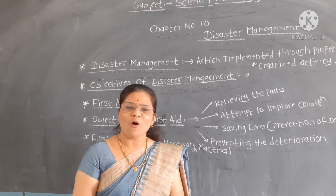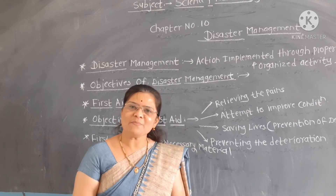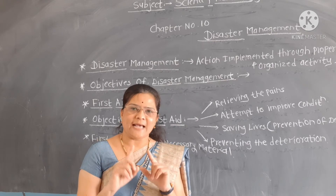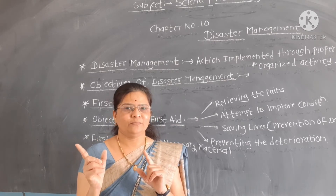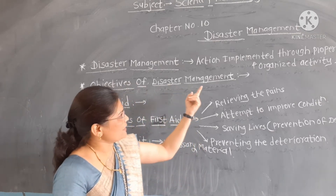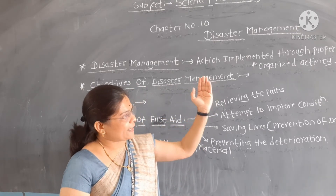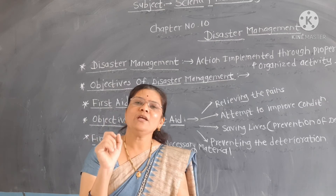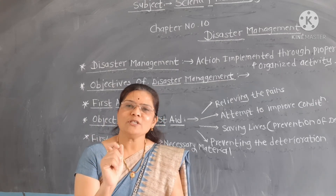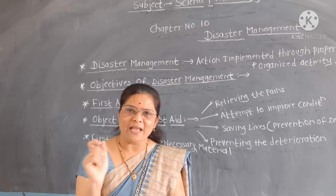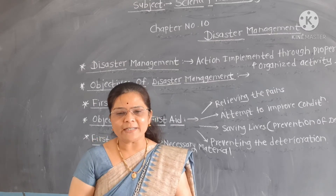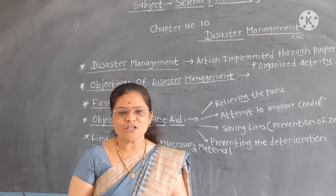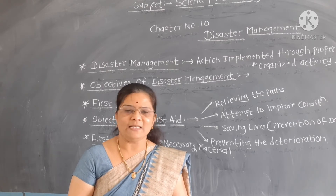Disaster may be minor or major, short-term or long-term. There is a close relationship between disaster and human participation. In disaster management, coordination and organized activity — the participation of people in rescue operations — means every person has a duty to be responsible for effective disaster management. There is a close relationship between disaster management and public participation.